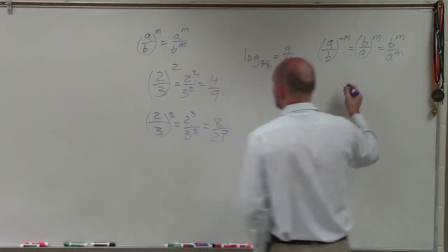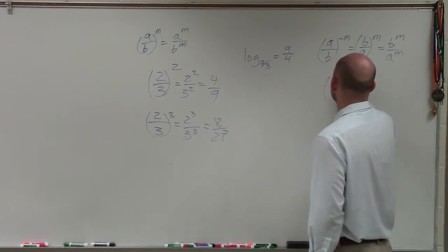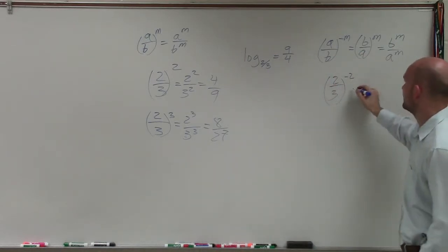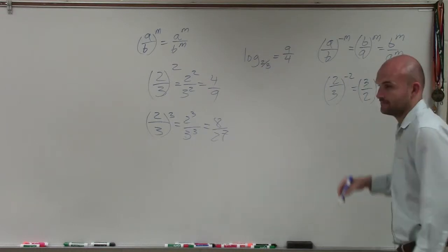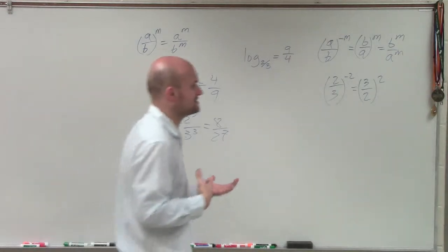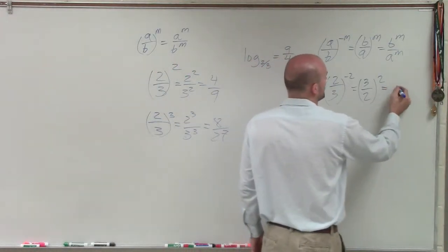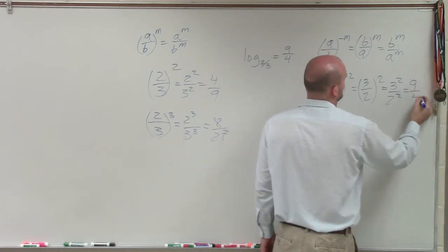All right, but now how about we take a look at our negative numbers? So if I did 2/3 to the negative power, what that means now is I can take the reciprocal of that and raise it to that power. All right, so if I raise it to the negative second power, I can take the reciprocal and then raise it to the positive power, which would be 3 squared over 2 squared, which is equal to 9/4.